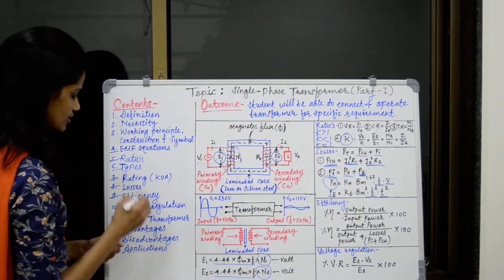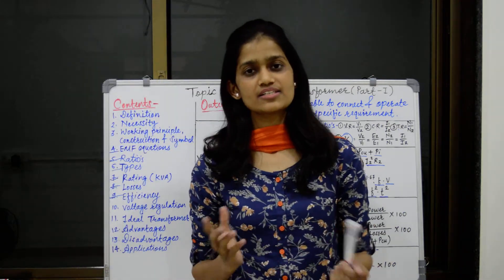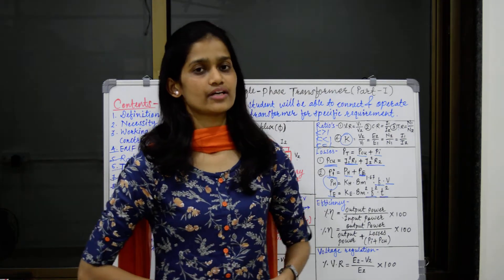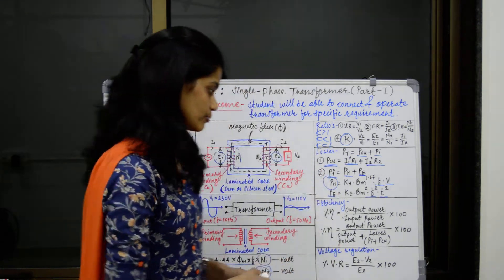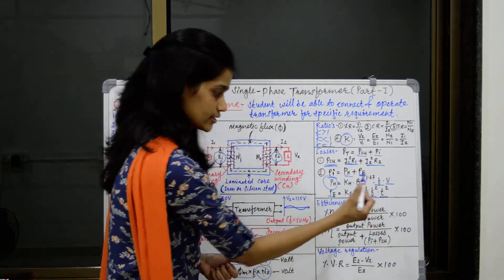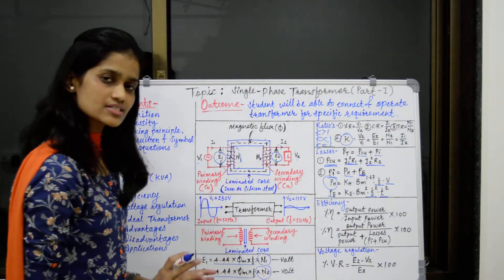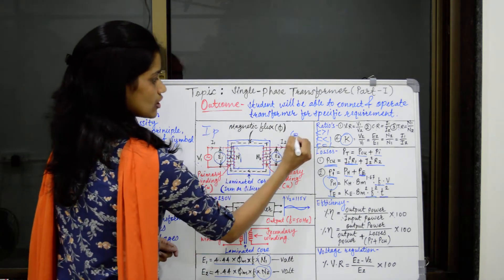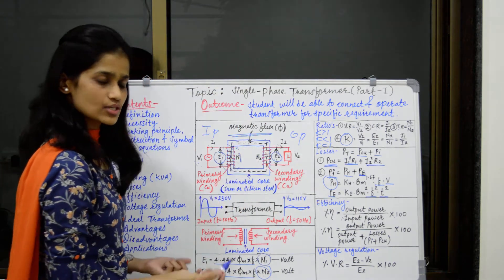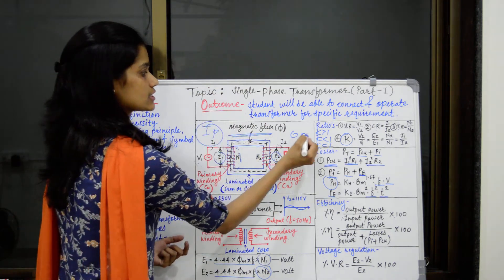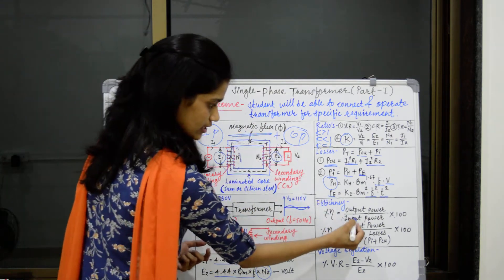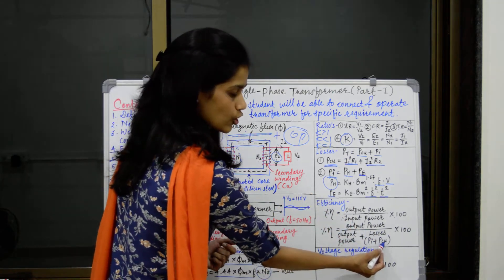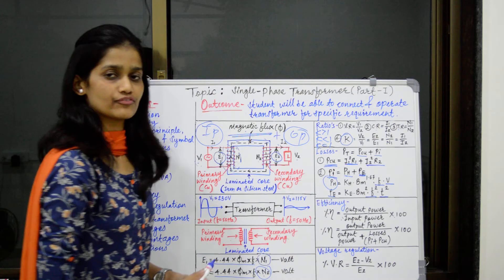Next is efficiency. To find efficiency, it is simple: just as you find your percentage marks as obtained marks divided by total marks into 100, likewise we find efficiency of a transformer as output power divided by input power into 100. For input power, we can say it is output power plus losses. So input power equals output power plus both iron loss and copper loss, and we multiply by 100 to get efficiency as a percentage.